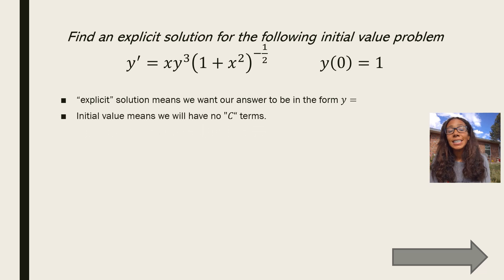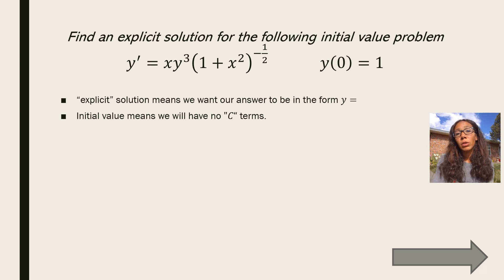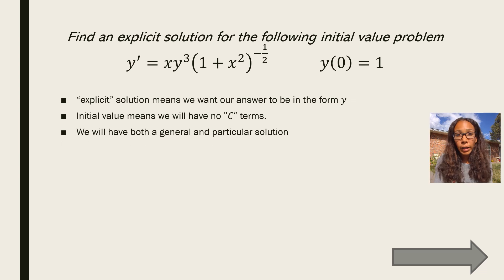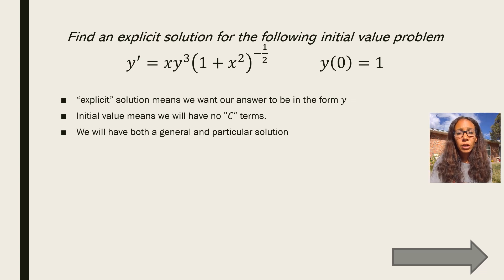Next, as it's an initial value problem, our answer should have no c terms. C terms means it's a general solution. When we're given an initial value problem, we work through the general solution and find the particular solution. Sometimes we're asked to find only a general solution, but if we're given an initial value, we should have both a general and a particular solution.